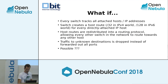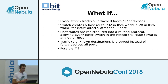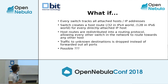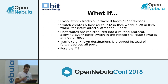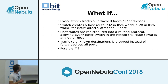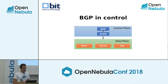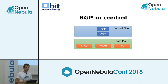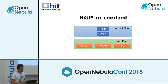We envisioned: what if every switch could track all attached hosts and IPv6 addresses, creating host routes - /32 or /128 - for every directly attached host? Host routes are redistributed in the routing protocol allowing every switch to route to any host. Traffic to unknown destinations is dropped instead of flooded out all ports. It turns out you can do this using BGP as the control plane with the EVPN extension. You can pick different data planes, and we chose VXLAN - it's commonly used in environments like ours.